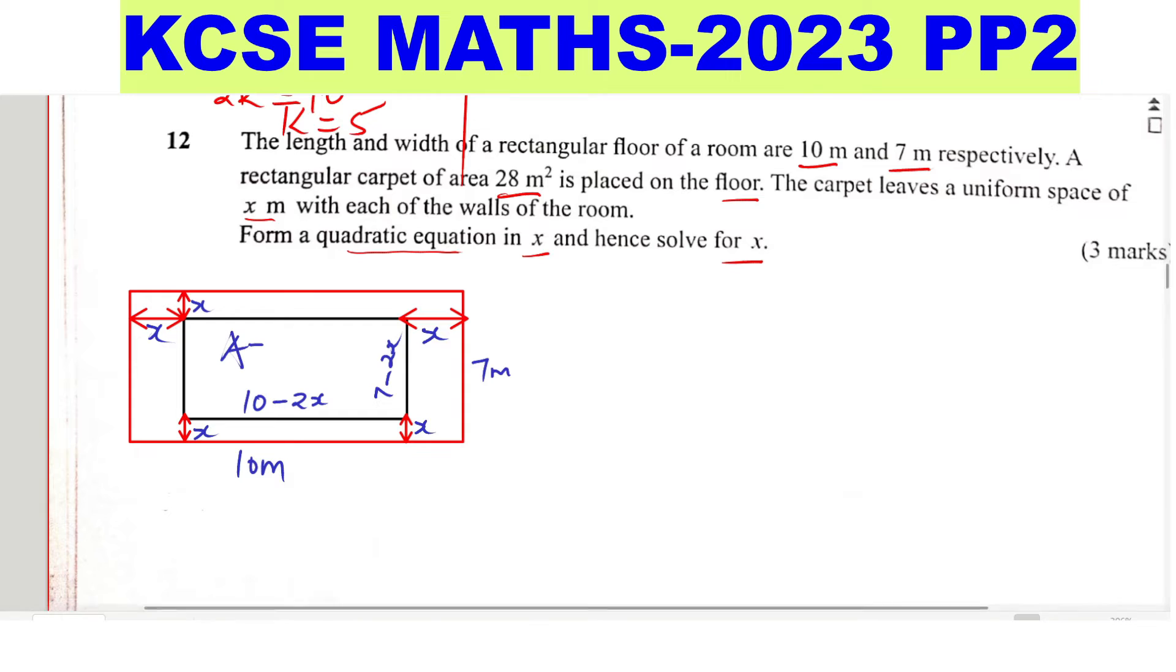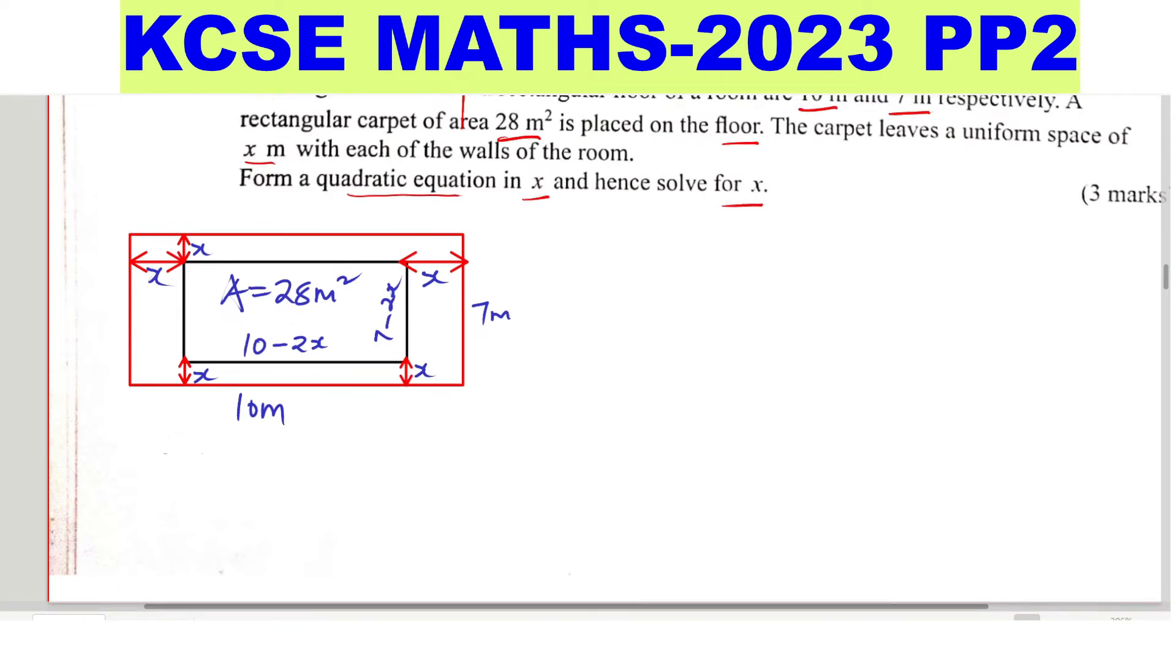And we have the area, this carpet is 28 square meters. So we have the length and the width, and now we need to get the value of x. So we can form this. Look at the area of the carpet. If we take 10 minus 2x as the length, multiply by the width, which is 7 minus 2x, we'll be able to form the quadratic equation equals to the area. So let's do that.